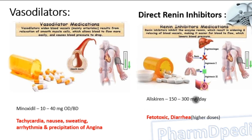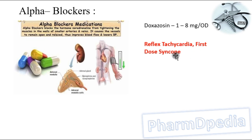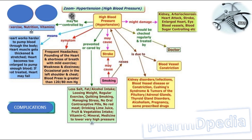Alpha blockers block the hormone noradrenaline from tightening the muscles of the walls of small arteries, causing vessels to remain open and relaxed, improving blood flow and lowering blood pressure. Example: doxazosin, 1 to 8 mg per day. Adverse reactions include reflex tachycardia and first-dose syncope.